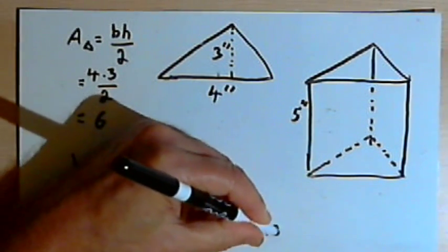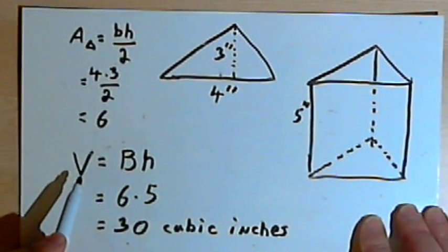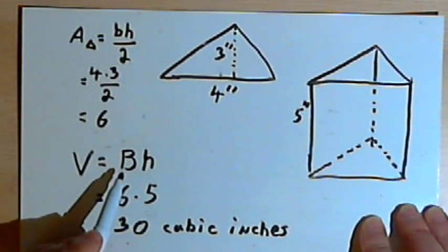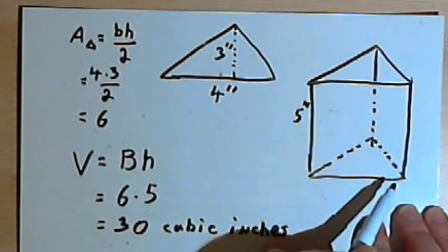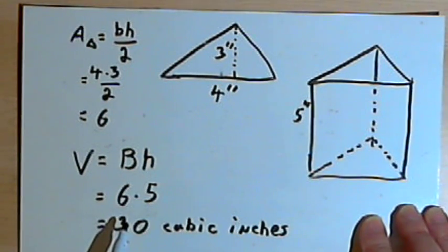When you're dealing with volume, make sure that your unit measurements are cubic. So all we did was apply the formula volume is the area of the base times the height. We found out what the area of the base was and then we multiplied that by the height.